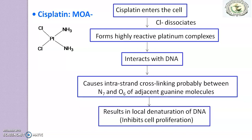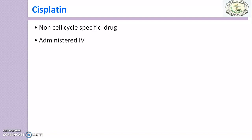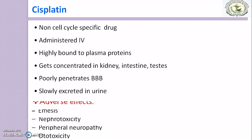Cisplatin acts in a similar way to that of Alkylating agents — it dissociates the chloride ions, becomes a reactive intermediate, and inhibits the synthesis of DNA. Cisplatin is a non-cell cycle specific drug. It can be administered by the intravenous route. It has high binding ability to plasma proteins and gets concentrated in the kidney, intestine, and testes. It poorly penetrates the blood-brain barrier and is slowly excreted in urine.